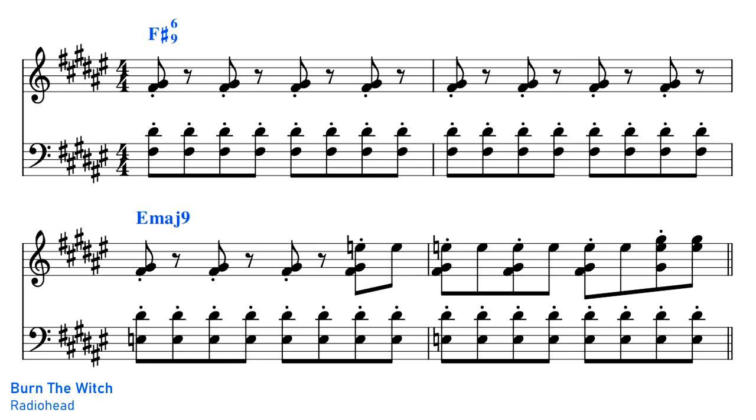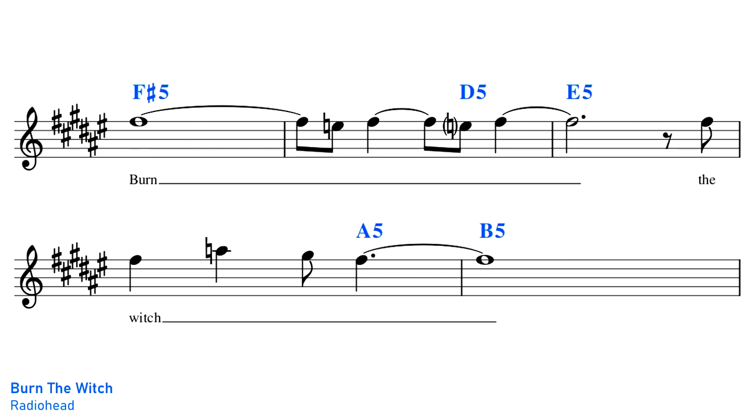A similar example is Burn the Witch by Radiohead. Burn the Witch starts out in F-sharp Mixolydian, vamping between the tonic chord F-sharp major and the lowered 7th chord E major. However, when we reach the chorus, the tonality shifts from F-sharp Mixolydian to F-sharp minor, or what we could call F-sharp Aeolian.